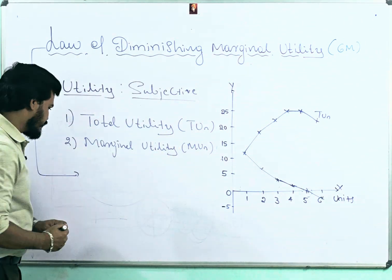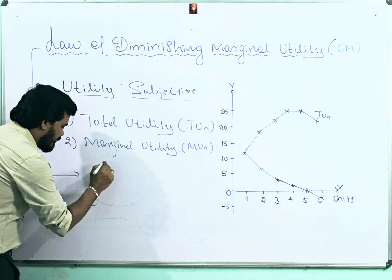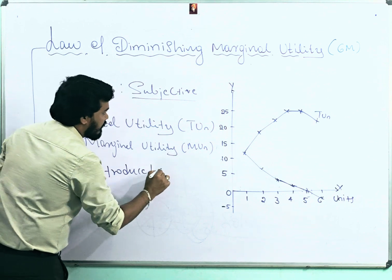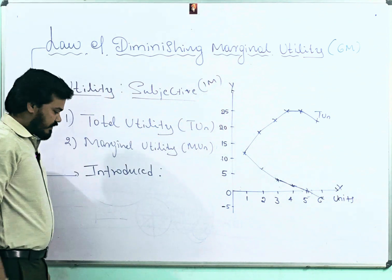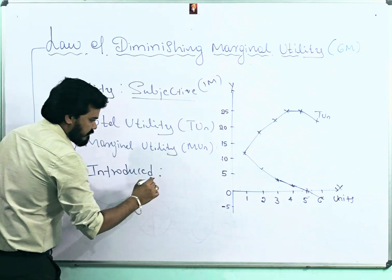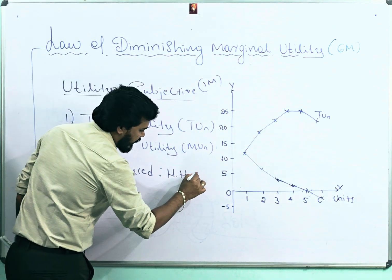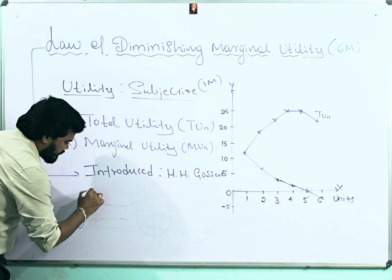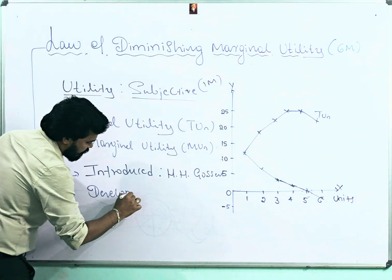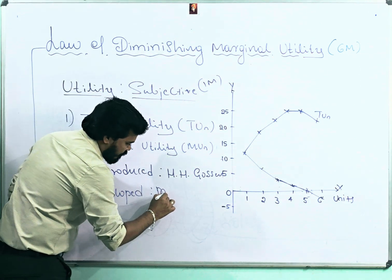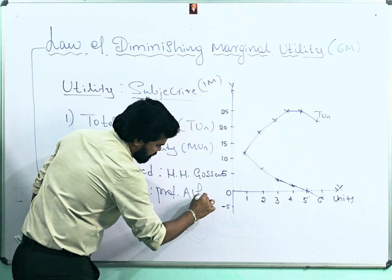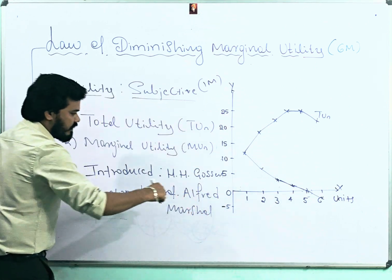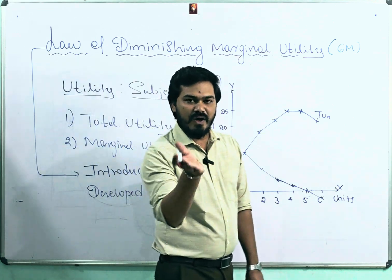To start answering the Law of Diminishing Marginal Utility, first mention who introduced the concept — this is very important and is also a one-mark question. This concept was introduced by Professor H.H. Gossen, and later it was developed by one of the great economists in microeconomics, Professor Alfred Marshall. Mentioning this will earn you one mark.